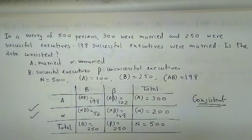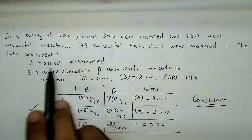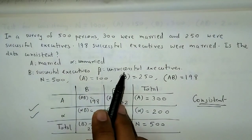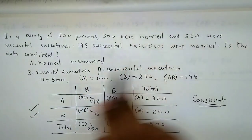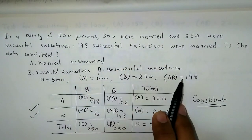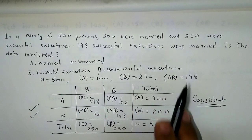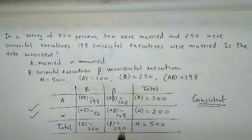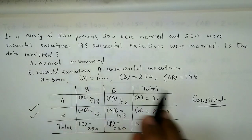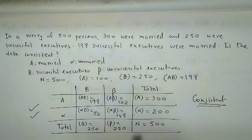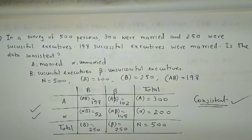So that was just an example of a word problem. First, you define the attributes. Then note down the given data in symbolic form. Then prepare the 9-square table. Check: is there a negative frequency? No. Do all totals match? Yes. So the given data is consistent.